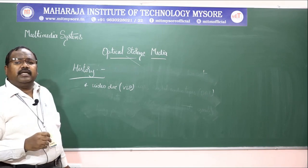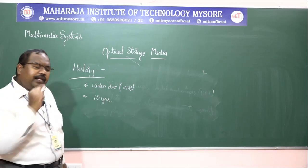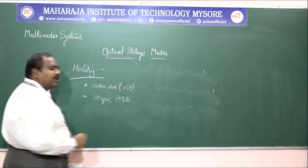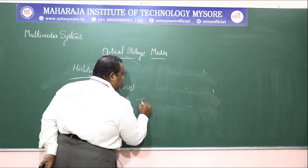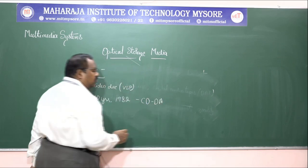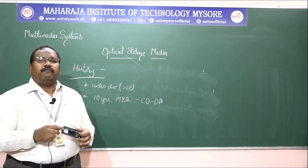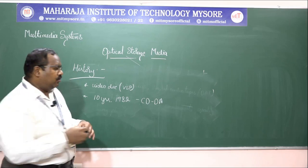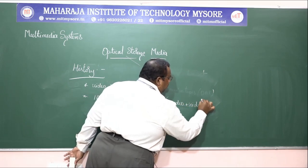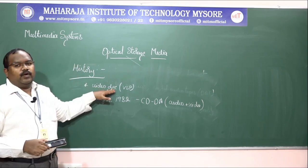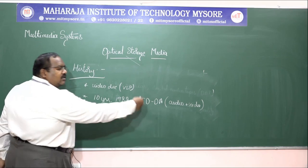Video long plays were executed in those days. Just after 10 years, in 1982, the Compact Disc Digital Audio was introduced — we call this CDDA. Compact Disc Digital Audio was introduced with stereo effects and the ability to store both audio and video. We were able to store audio and also video into it. This was an added advantage over video long play. In 1982, CDDA came up.